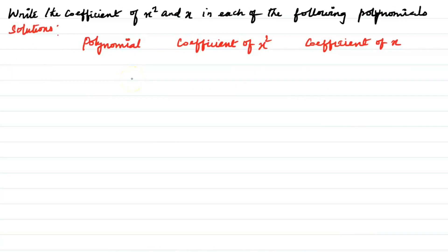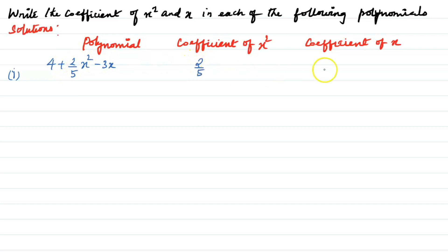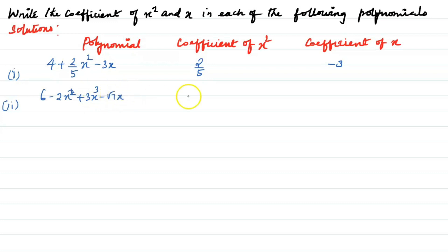Next question: write the coefficient of x² and x in each of the following polynomials. First: 4 + (2/5)x² - 3x. The coefficient of x² is 2/5. Second: x³ - 2x² + 3x³ - √7 x. The coefficient of x² is -2, and the coefficient of x is -√7.